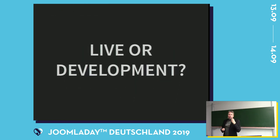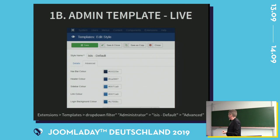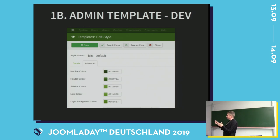There's a question about whether you're in the live or development environment — maybe you have two websites, the current and the new one. How can you see which is which? I changed the backend template color. In Joomla 3, you go to Extensions > Templates, filter by Administrator, and the default template is called Isis. When you click Advanced, you can change all the colors. I set the live website to green so I can easily see the difference. In Joomla 4, you just set one color and it derives the rest.